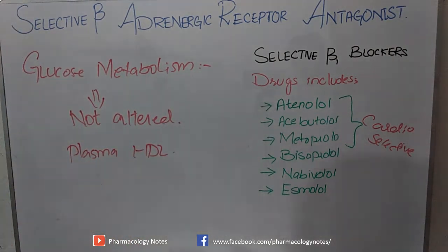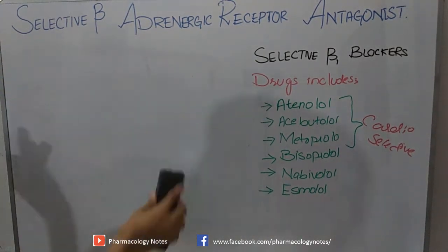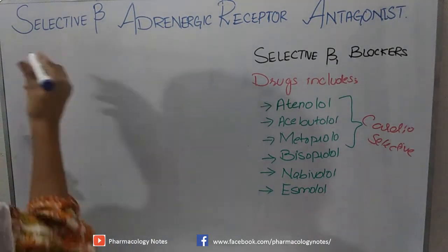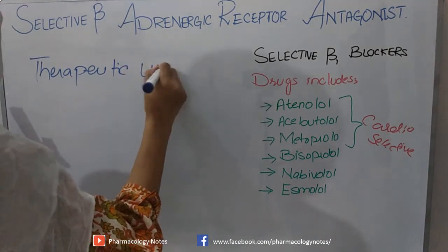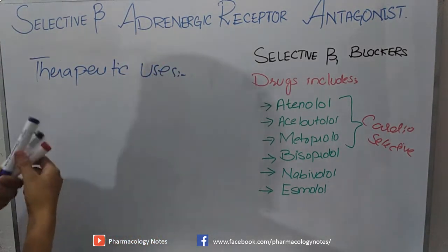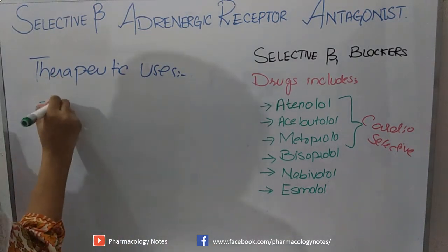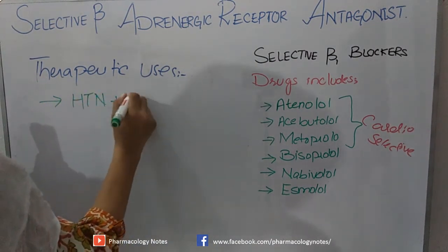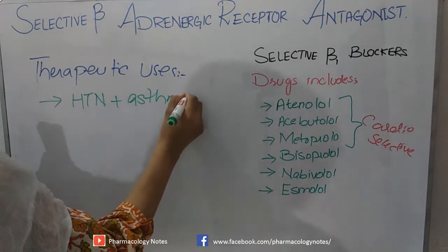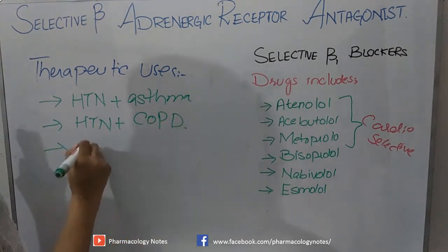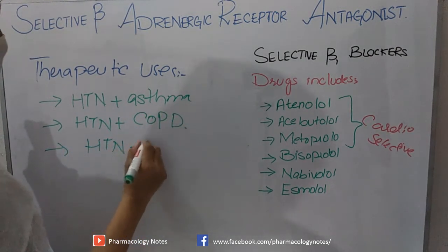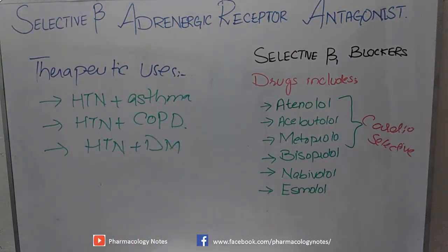The therapeutic uses of selective beta-1 blockers include hypertension in patients who also suffer from asthma, hypertension in patients with COPD, and hypertension in patients with diabetes mellitus — situations where non-selective beta-blockers like propranolol cannot be used.